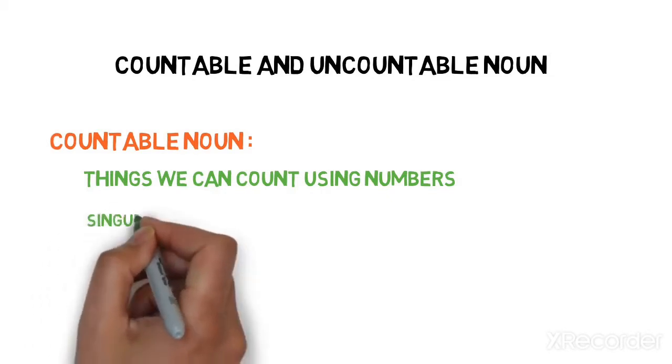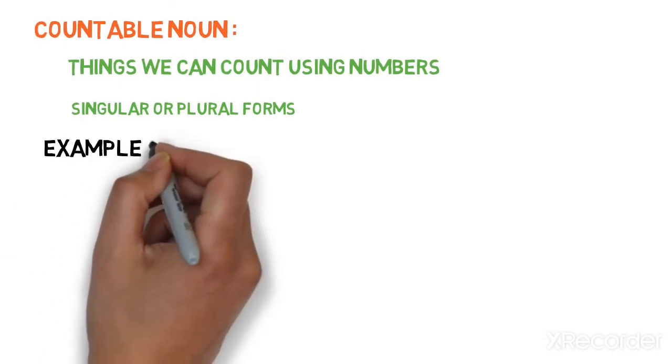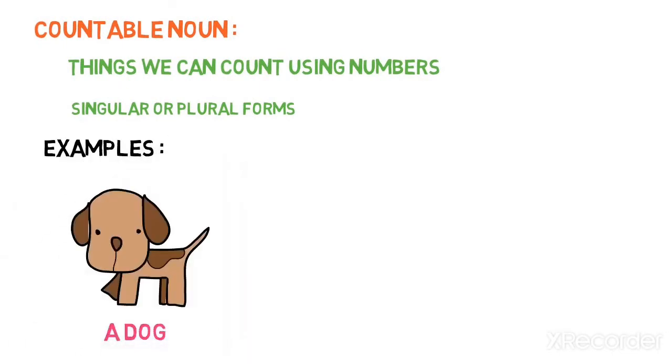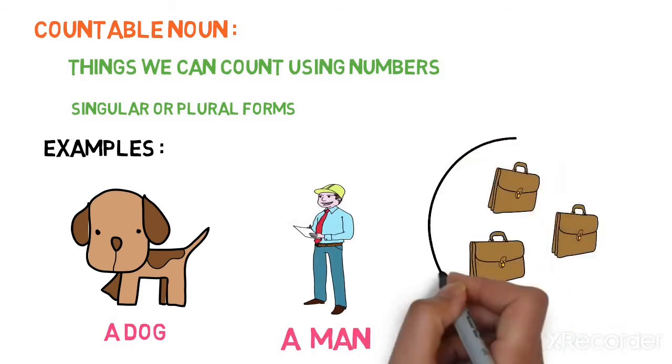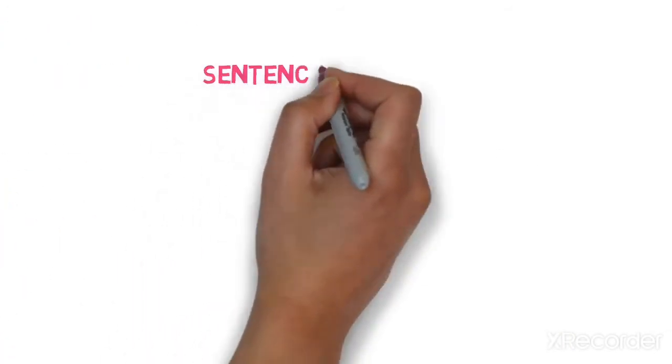Countable nouns can be singular or plural form. Examples: a dog, a man, three bags. Here you can see you can count dog, man, bags. So they come in the category of countable nouns. Now let's look at countable nouns in form of sentences.